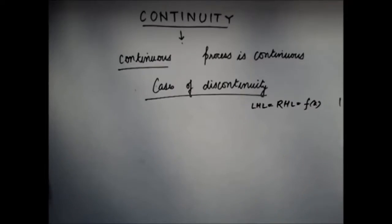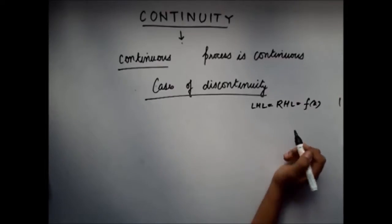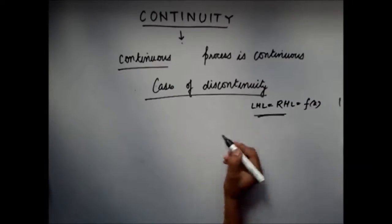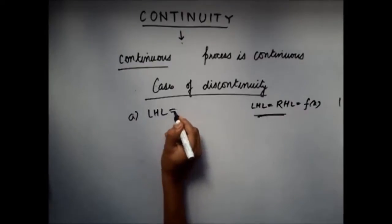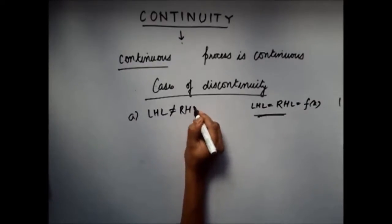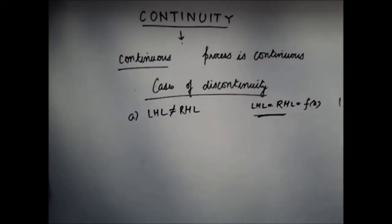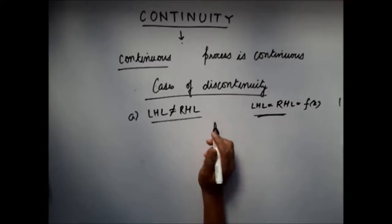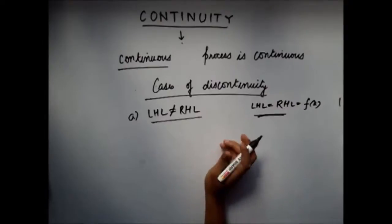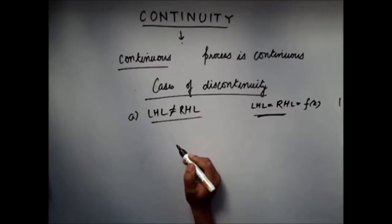This was the condition for a function to be continuous at a particular point x equals to a. Now, the first condition which can make a function discontinuous is that the left hand limit is not equal to the right hand limit. If left hand limit is not equal to right hand limit, that means the limit itself doesn't exist, so the function is discontinuous at the particular point x equals to a.